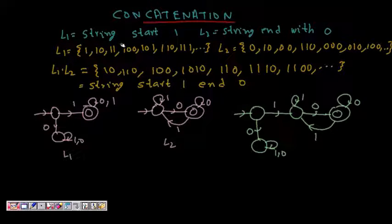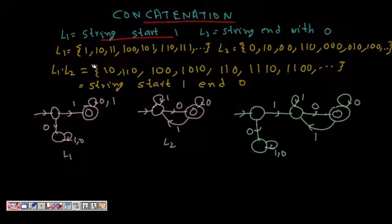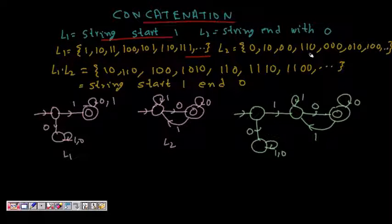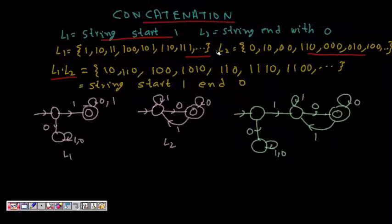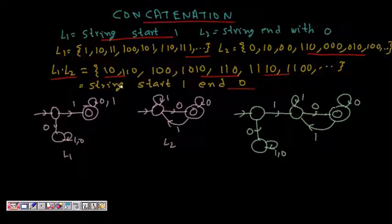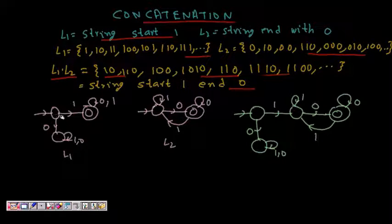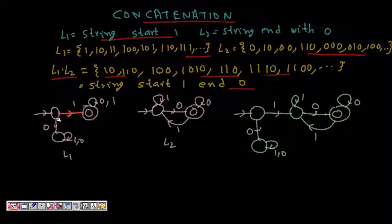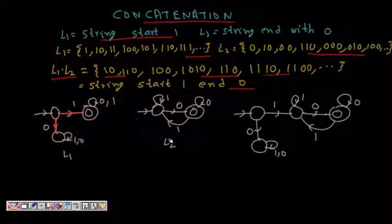Now let's discuss concatenation with a concrete example. L1 is the set of strings starting with 1, and L2 is the set of strings ending with 0. L1 contains strings like 10, 110, 1010, and so on; L2 contains strings like 0, 10, 100, and so on. The concatenation L1 dot L2 picks the first string from L1 and the second from L2. All resulting strings start with 1 and end with 0.